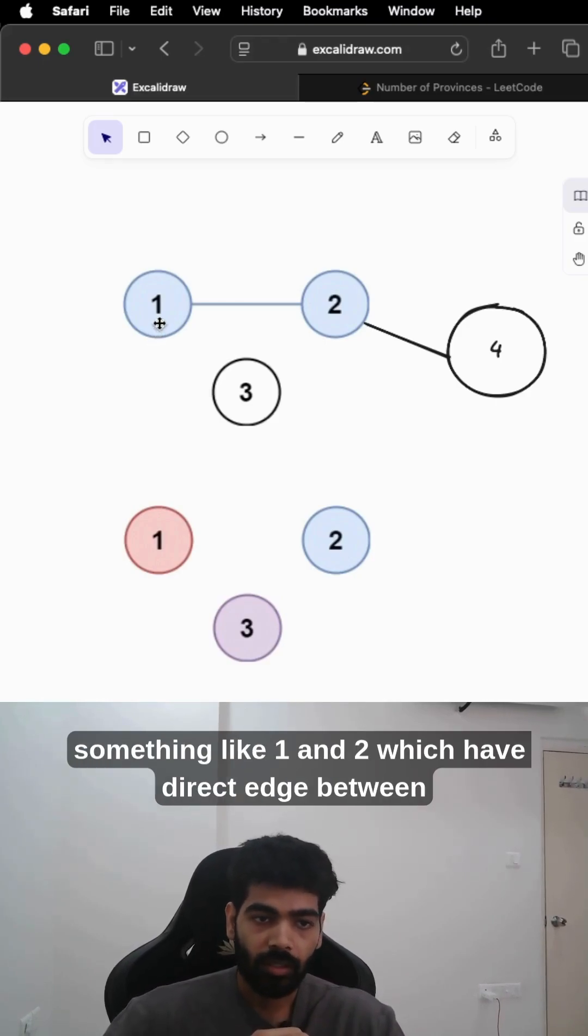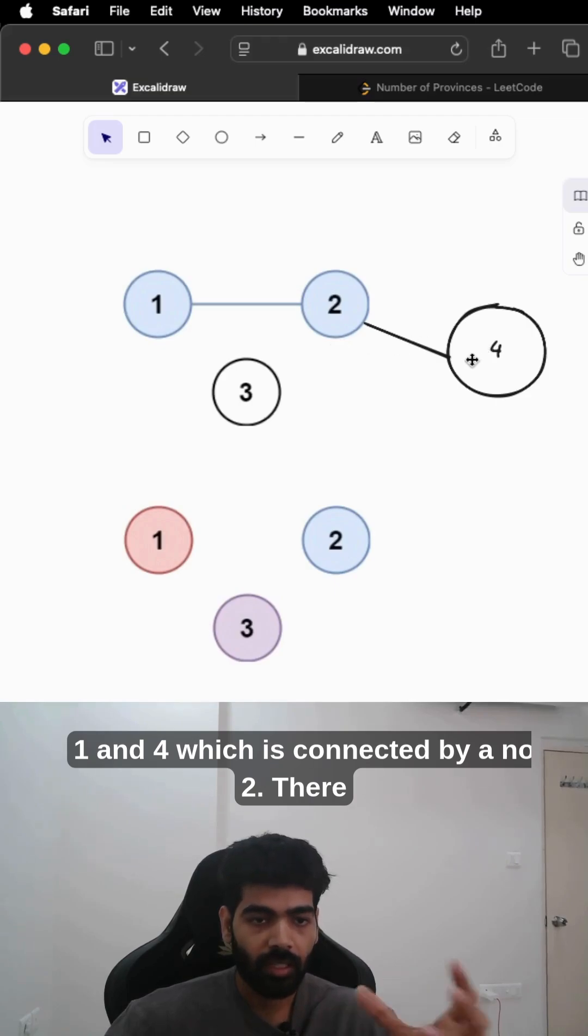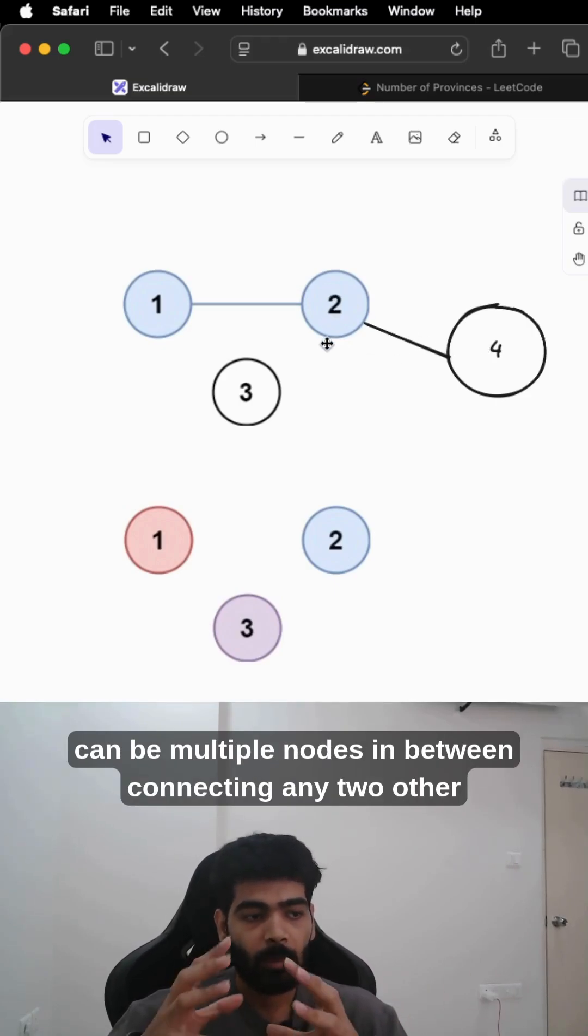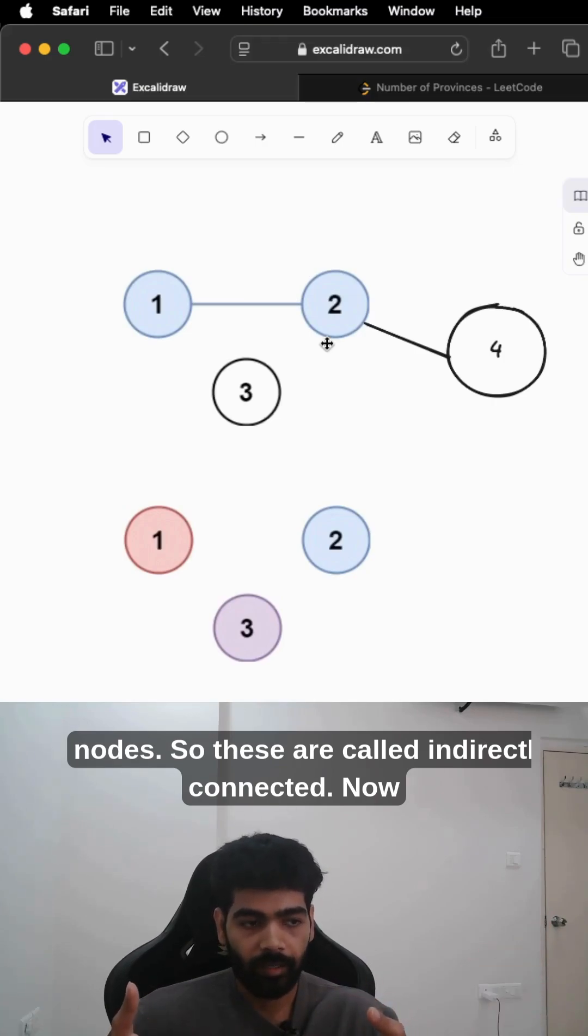A directly connected node is something like one and two, which have a direct edge between them. Indirectly connected is something like one and four, which is connected by node two. There can be multiple nodes in between connecting any two other nodes. These are called indirectly connected.